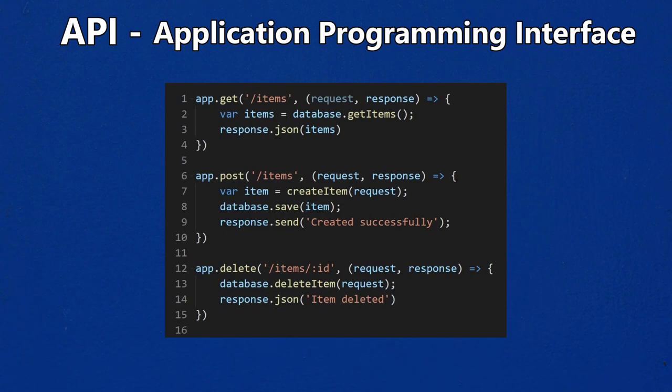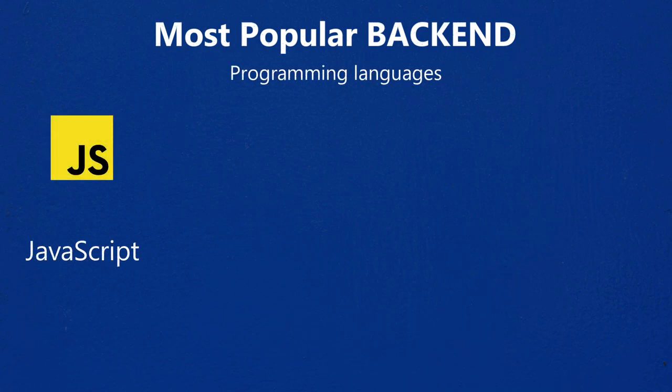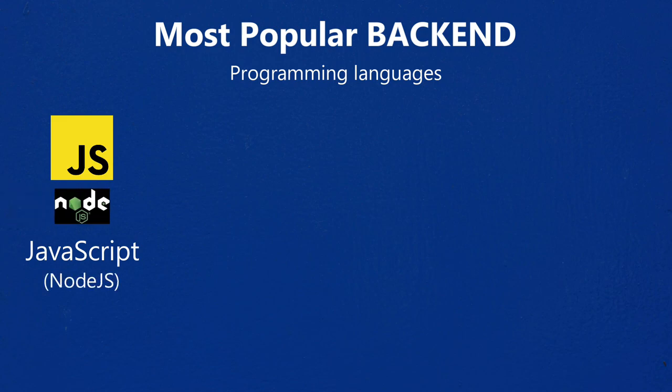Now let's find out which backend programming languages are the most popular nowadays. JavaScript is undoubtedly the leader of backend languages — it has been the most popular language for 10 years in a row, with over 65% of developers using it. While JavaScript is widely used in front-end development, in recent years it's used for backend development too. Node.js, which is a JavaScript runtime, makes that possible by providing backend functionality.